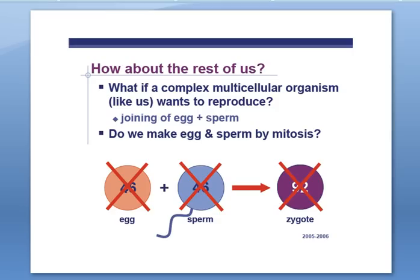How about the rest of us? If we used 46 chromosomes in our eggs and 46 in our sperm, we'd have 92 chromosomes in our zygote, and that doesn't work for humans.